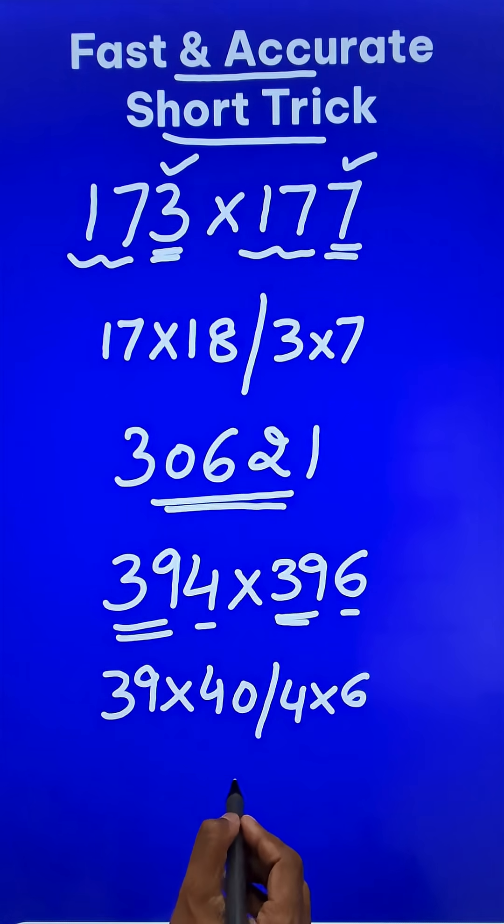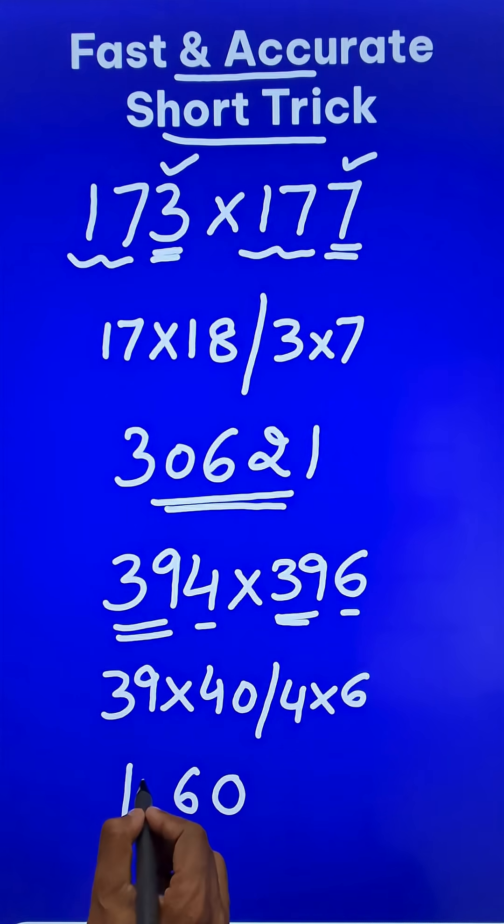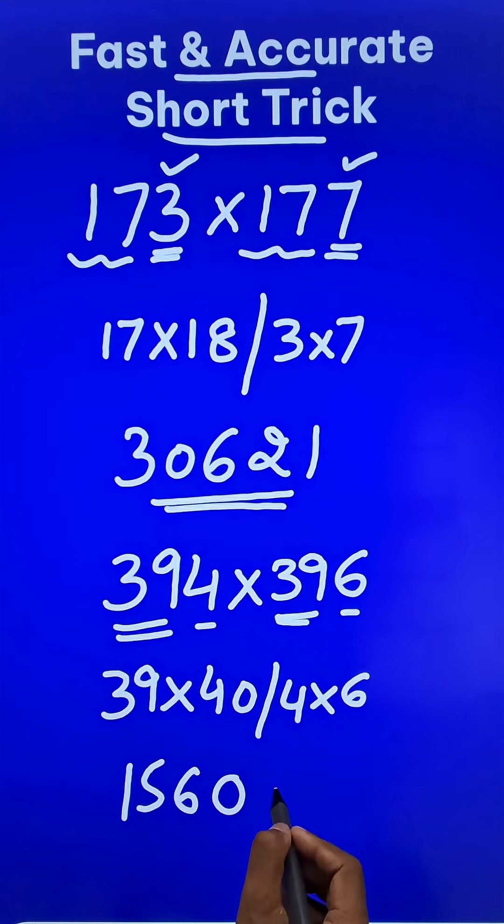Now 39 times 40 is 1560, and 4 times 6 is 24. Now pick up the calculators and check your answers.